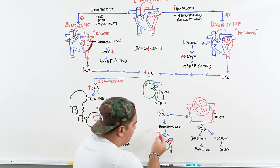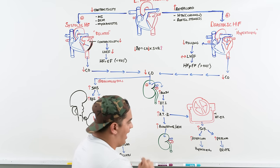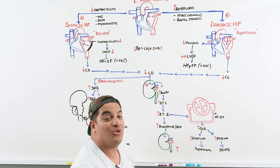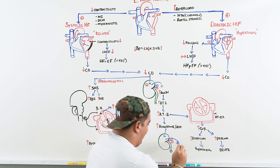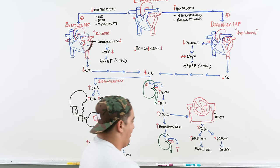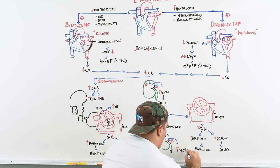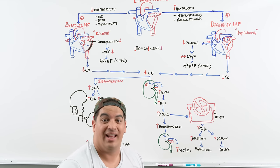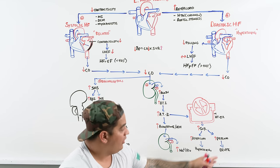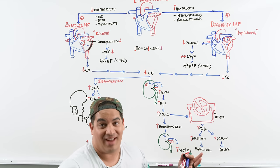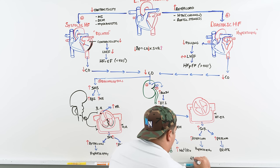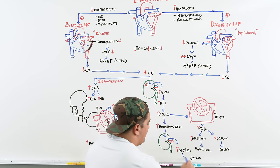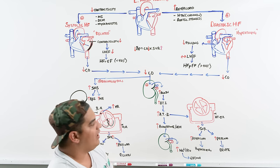Aldosterone and ADH increase sodium and water reabsorption, causing the patient to retain large amounts of fluid. This leads to edema and even more preload, forcing the ventricles to dilate further. This is why understanding the RAAS is critical — high angiotensin II, high sympathetic activity, and fluid retention all worsen heart failure progression.